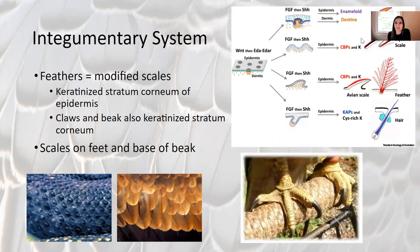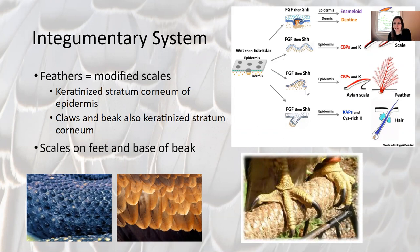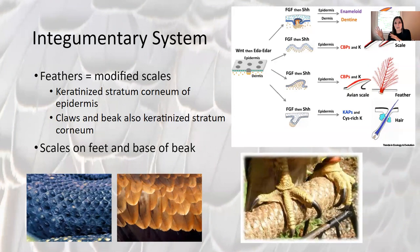Starting with the integumentary system, birds have feathers. They are the only taxa of vertebrates that have feathers, and feathers are actually modified scales. The same cells in the different taxa of vertebrates are all kind of the base for scales, feathers, and hairs in mammals — it's just different proteins that direct those cells toward being a scale, a hair, or a feather. So feathers are keratinized stratum corneum of the epidermis.